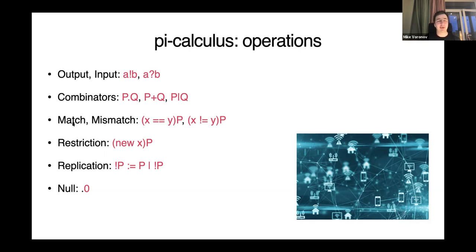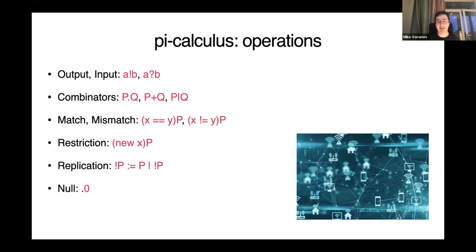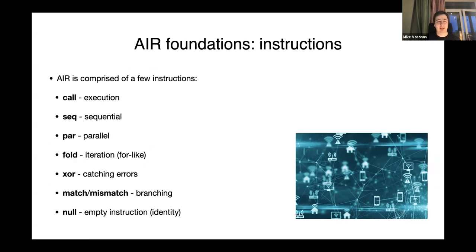The next important things are match and mismatch — they just allow you to branch inside the calculus, comparing some values. In Pi-calculus, invented in the 1980s, 'process' here could be anything — an OS process, another client, etc. — because all communication can be considered as sending messages. AIR consists of eight instructions.